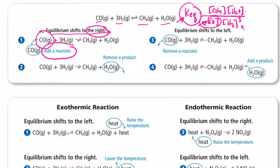Another way we can shift equilibrium to the right is if we remove product. Looking at our equilibrium expression, if we remove water vapor and this number on top gets smaller, the methane would have to get bigger, and the carbon monoxide and hydrogen gas would have to get smaller. Practically, removing water vapor places a stress on the system, so we shift to the right to make more water vapor — and that also means more methane is made and CO and H₂ are reduced.